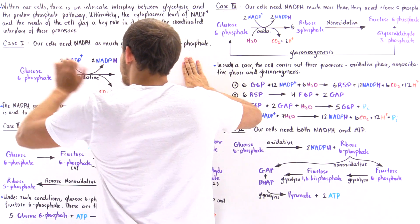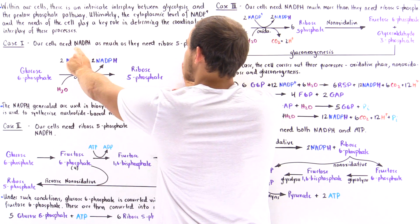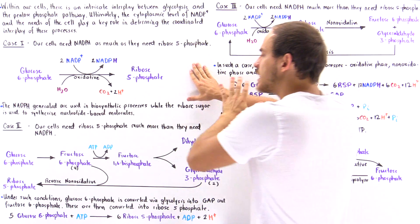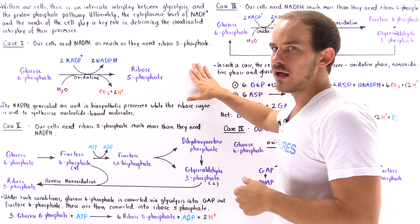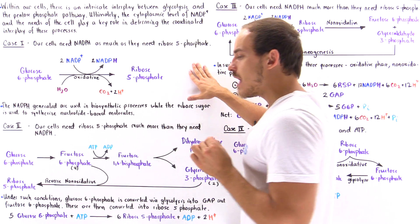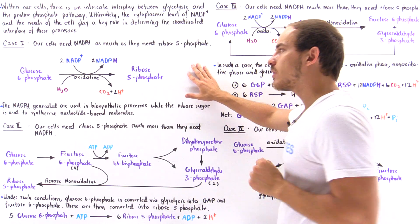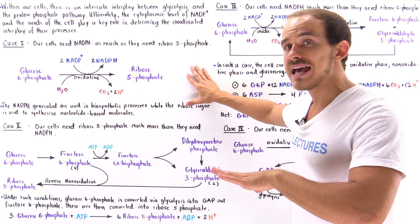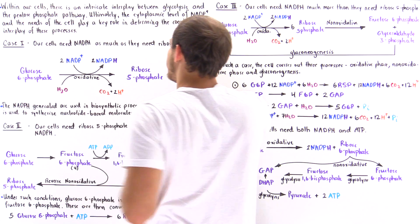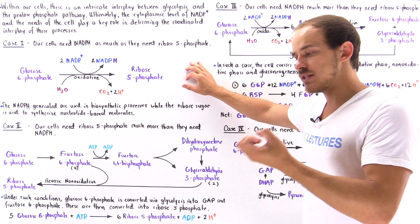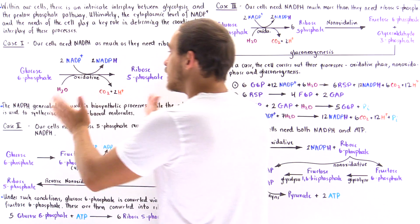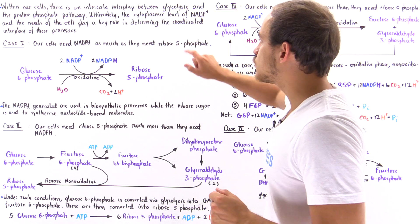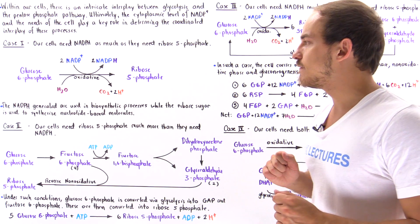So in case number one, when our cells need NADPH as much as they need ribose-5-phosphate, the cell will not carry out the glycolytic pathway and will not carry out the non-oxidative phase of the pentose phosphate pathway. Instead, it will only carry out the oxidative phase of the pentose phosphate pathway, because this is the phase that generates both NADPH molecules and ribose-5-phosphate molecules.